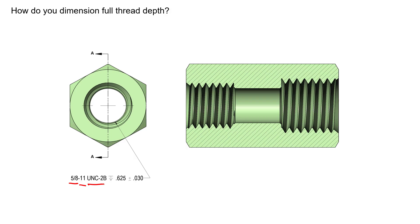Usually you'll have some sort of depth call out if it's a blind hole or threaded feature that doesn't go all the way through the part, and there's a certain depth to this feature. We can see here this 0.625 plus or minus 0.030 is going to control the overall thread depth to the last usable thread.